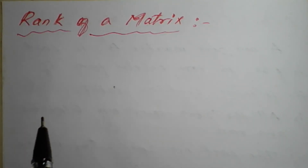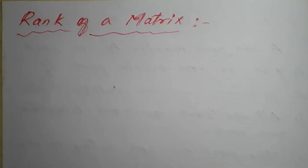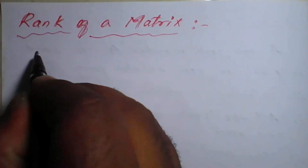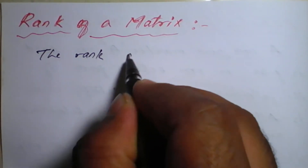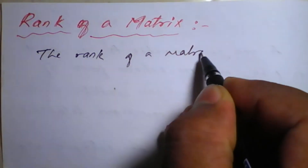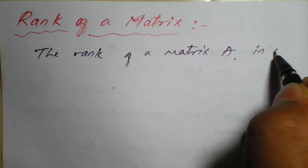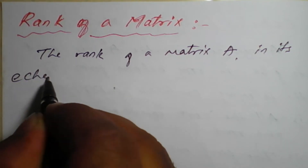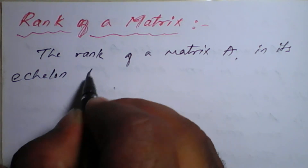Hello students, in today's lecture we'll see rank of a matrix — how to find the rank of a matrix. The rank of a matrix completely depends on its echelon form. The rank of a matrix A, in its echelon form — you know very well it is nothing but the form where below the diagonal elements are supposed to be zero.